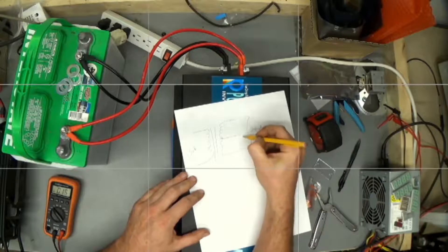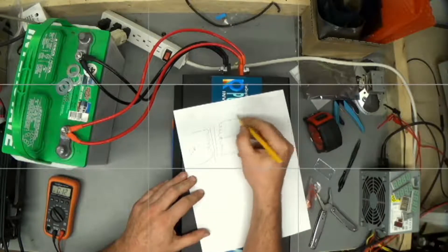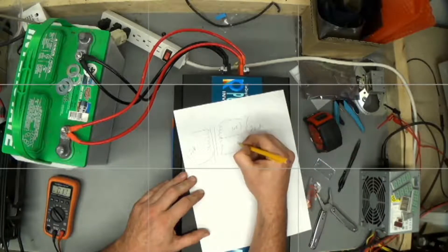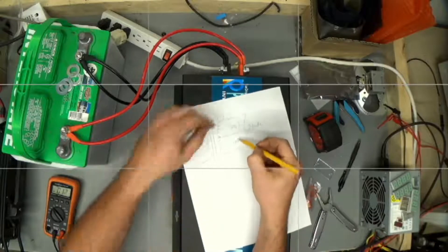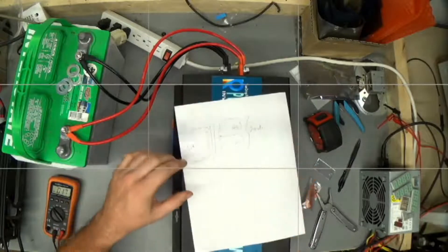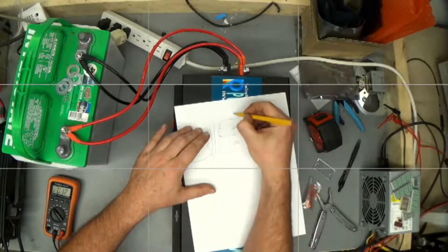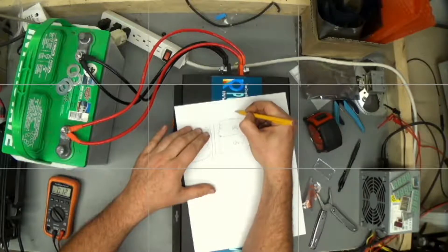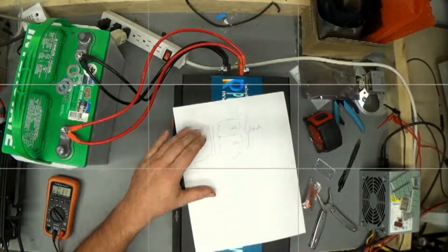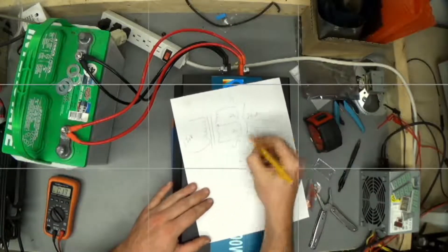So if we measure between the center tap and either of the two sides here, we'll get 120 volts. But these two 120 volt sides will be 180 degrees out of phase. When this waveform up here looks like this, this one down here will look like this. Anyway, so this goes into your house.